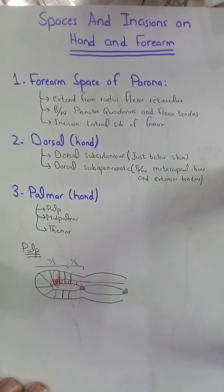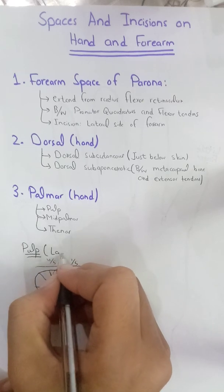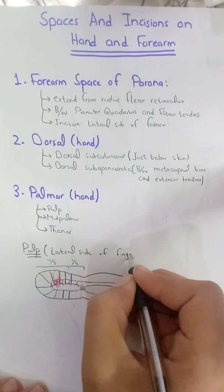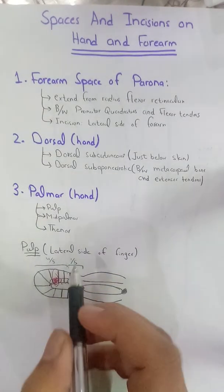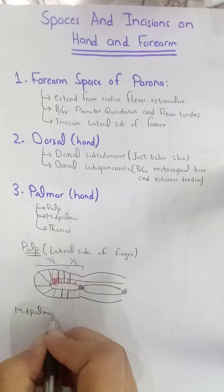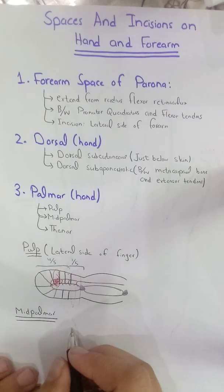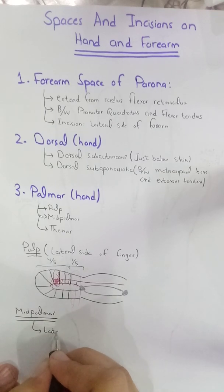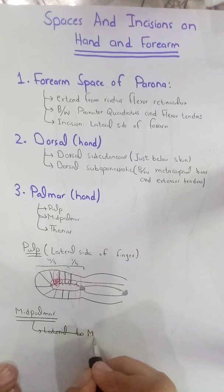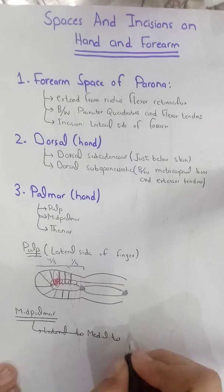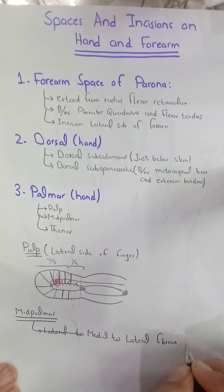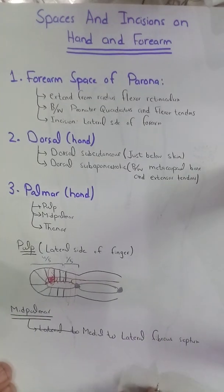The incision for the pulp space is on the lateral side of the finger. Now we will move toward the mid palmar space. This mid palmar space is present medial to the lateral fibrous septum.